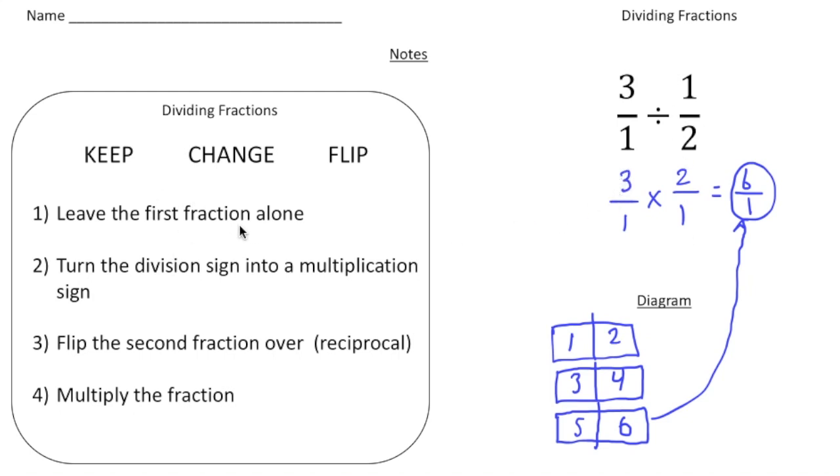So again, to divide fractions you keep change flip. You keep the first fraction as is. You change the sign to multiplication. And then you flip the second number of fractions and then you multiply.